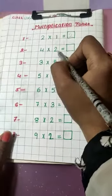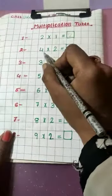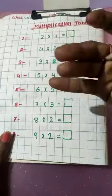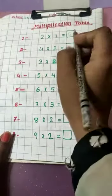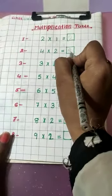Now next one, 4 into 2 equal to. Means 4 ka table 2 times pardhayenge. 4 plus 4, 4 to the 8. Right here, 8.